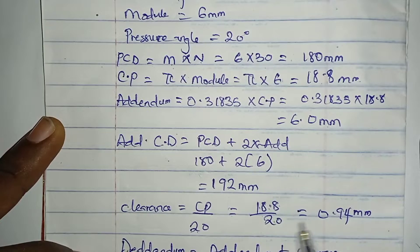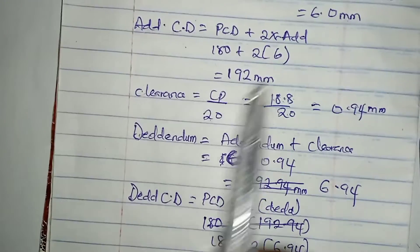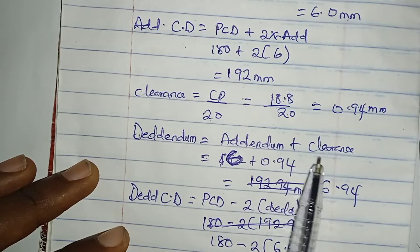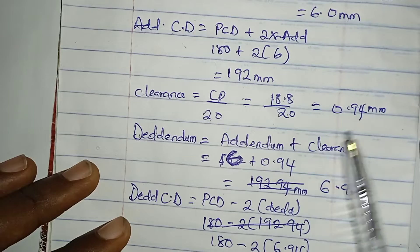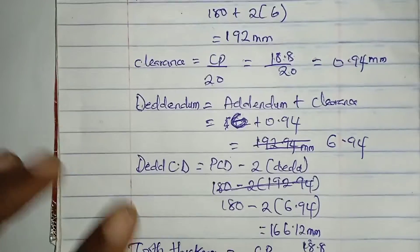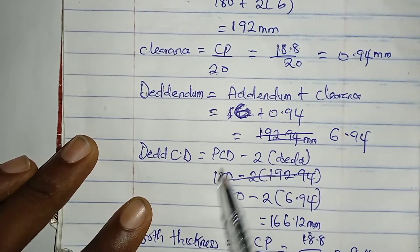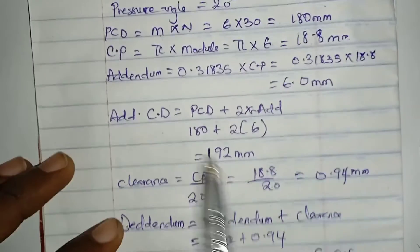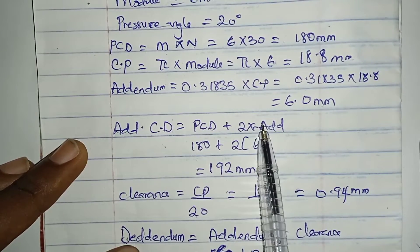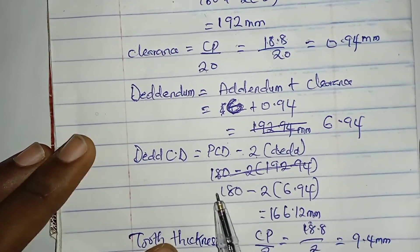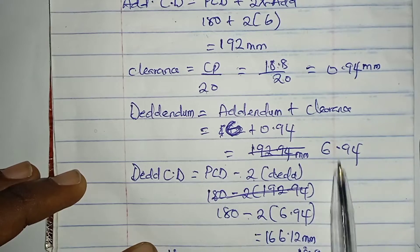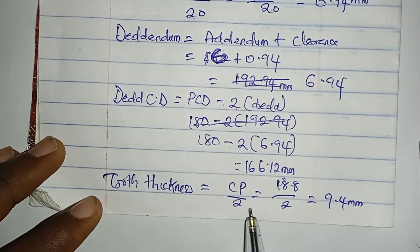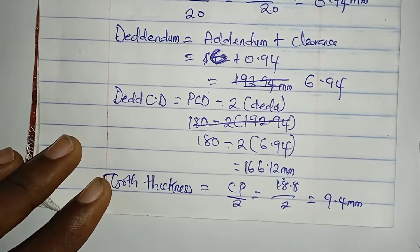For our clearance, we have circular pitch divided by 20: 18.8 divided by 20 gives us 0.94 millimeters. Our dedendum equals addendum plus clearance: 6 plus 0.94 gives us 6.94 millimeters. For our dedendum circle diameter, we have pitch circle diameter minus 2 times dedendum: 180 minus 2 times 6.94, giving us 166.12 millimeters. Finally, our tooth thickness equals circular pitch divided by 2: 18.8 divided by 2, giving us 9.4 millimeters.